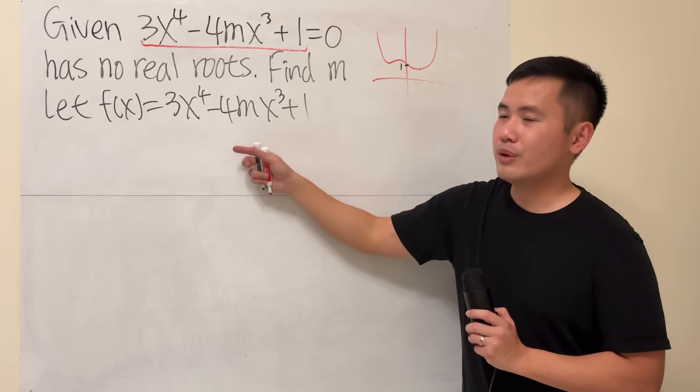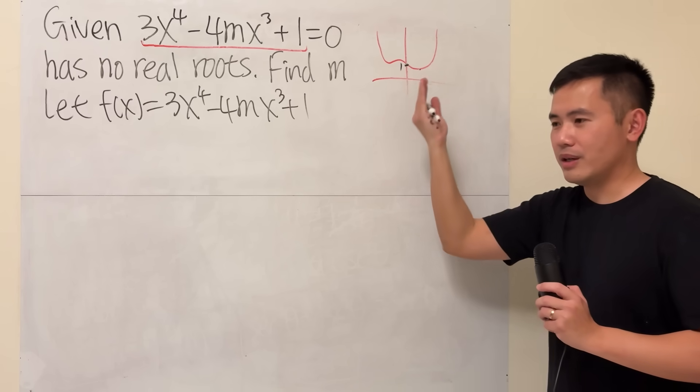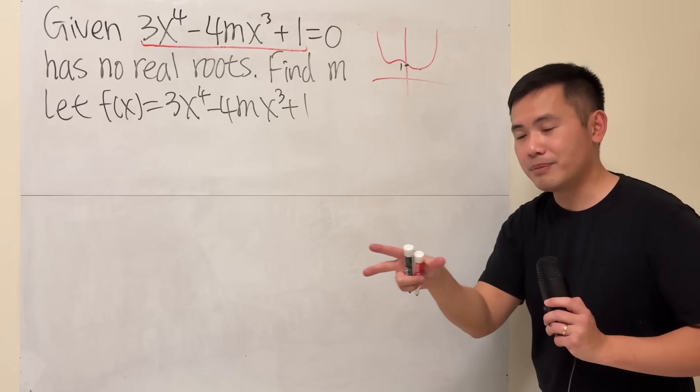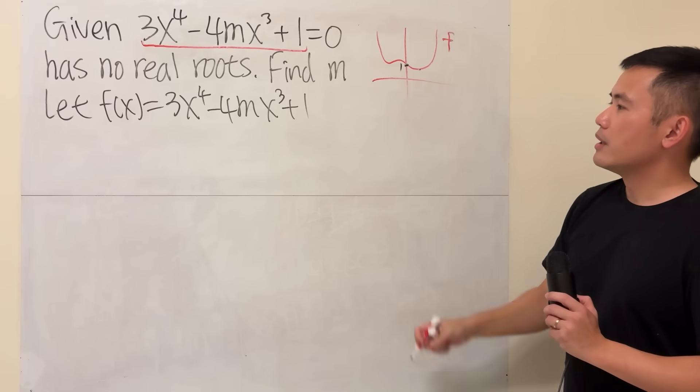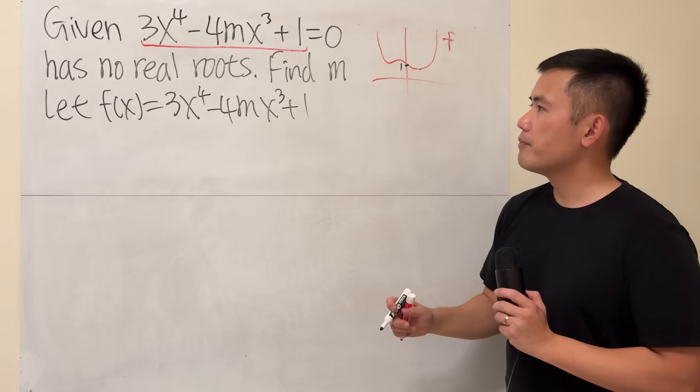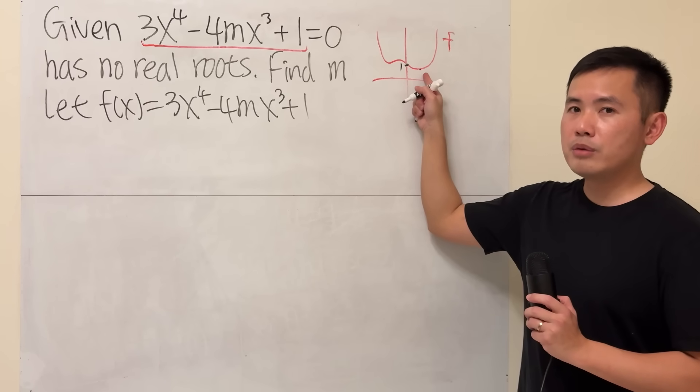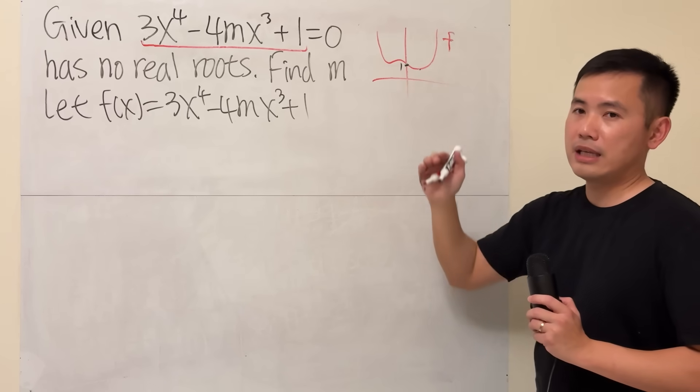Imagine if m equals 0, it will just be a nice, like a more flat U on the bottom. That's our function. I want to make sure the minimum does not go below the x-axis.